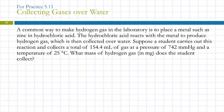Let's do another one. A common way to make hydrogen gas in the lab is to place a metal such as zinc in hydrochloric acid. The hydrochloric acid reacts with the metal to produce hydrogen gas, which is then collected over water. Suppose a student carries out this reaction and collects a total of 154.4 milliliters of gas at a pressure of 742 millimeters of mercury and a temperature of 25 degrees Celsius. What mass of hydrogen gas in milligrams does the student collect?